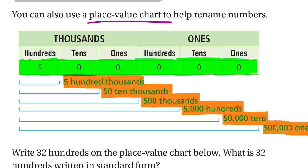Notice the pattern: 'ones' means no zeros, so 500,000 equals 500,000 ones. The word 'tens' is like one zero; 'hundreds' is like two zeros; 'thousands' is like three zeros; 'ten-thousands' is like four zeros; and 'hundred-thousands' is like five zeros. This trick helps you solve renaming problems quickly.